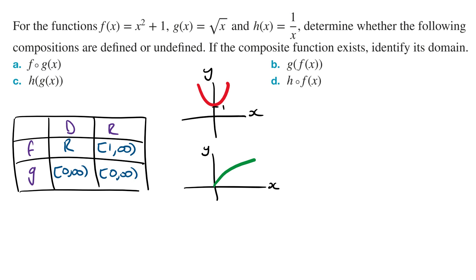From here, we can see that the range of the inner function, g(x), is a subset of the domain of the outer function, f(x), which means this composite function exists. If you are not sure, you can draw a number line and check.